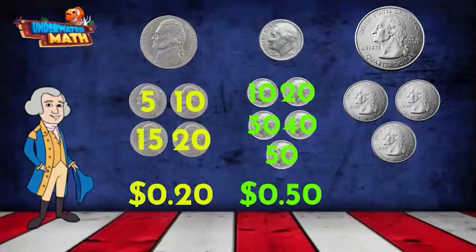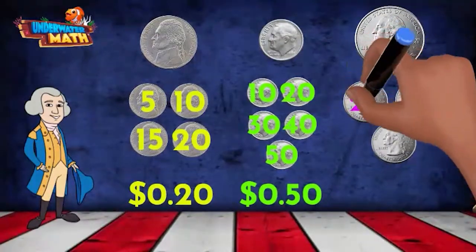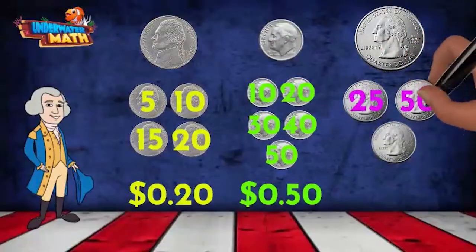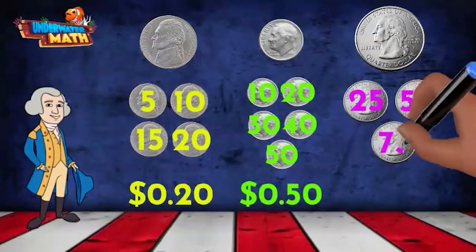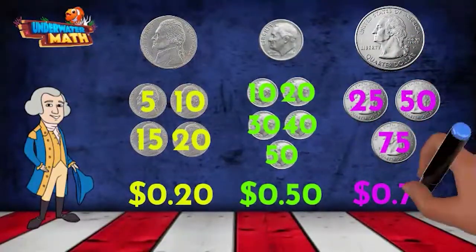Can I try the quarter? Quarters are worth 25 cents. Therefore, we count by 25: 25, 50, 75. We have 75 cents in quarters.